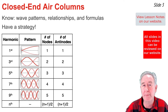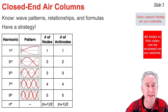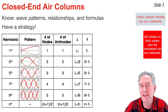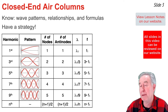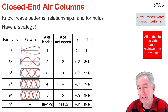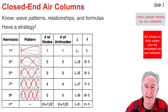You'll notice in the first column we have the first, third, fifth, seventh, and ninth harmonics, but there's never an even-numbered harmonic for closed-end air columns. The fifth column of the table shows the wavelength relationship: the wavelength of the nth harmonic is the wavelength of the first harmonic divided by n.